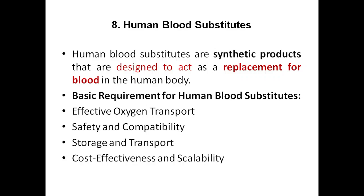The second requirement is safety and compatibility. Our blood is safe and compatible. If you are going to synthesize a blood substitute in the laboratory, we need to make sure it is safe and compatible with all the living systems — cells, tissues, and organs inside the body. Next, storage and transport: it should be able to store and transport oxygen. Next, cost effectiveness and scalability: it should not be too costly, and larger scale production should be possible.